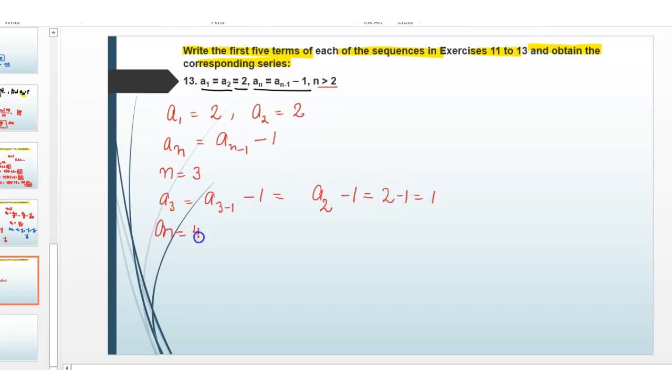Now put n equals 4. Then a4 equals a(4-1) minus 1, which equals a3 minus 1, which equals 1 minus 1 equals 0.